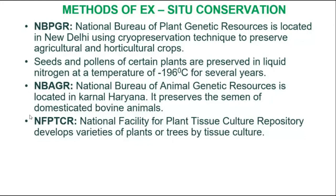For plant conservation, there is the NBPGR — National Bureau of Plant Genetic Resources. Plants can be conserved and live specimens cultivated in gardens. Seeds or pollen can be stored at low temperatures of minus 196 degrees Celsius for many years. When needed, seeds can be germinated. Similarly for animals, there is NBAGR — National Bureau of Animal Genetic Resources — located in Karnal, Haryana, which conserves semen and ovum of bovine animals.